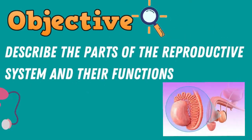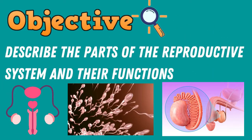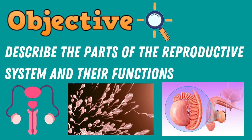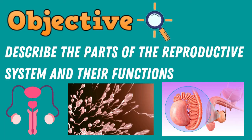Our objective for this lesson is to describe the parts of the reproductive system and their functions. Are you ready to have some fun in learning science? Let's go and explore the parts of the reproductive system and their functions!